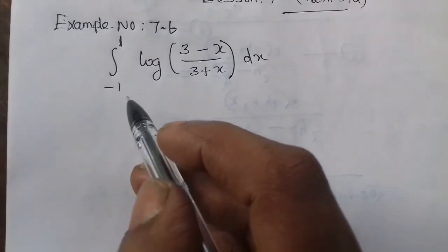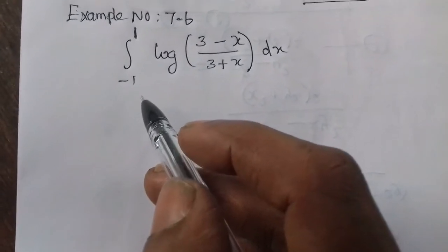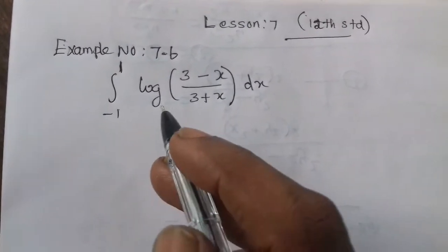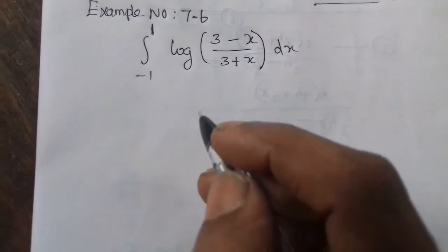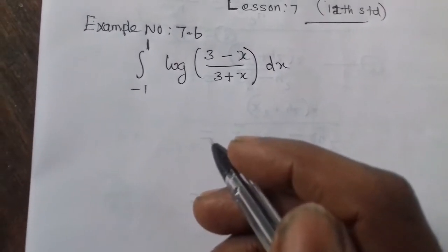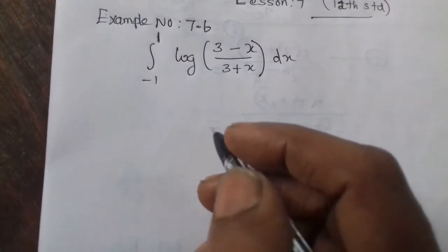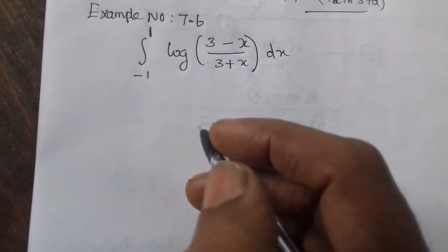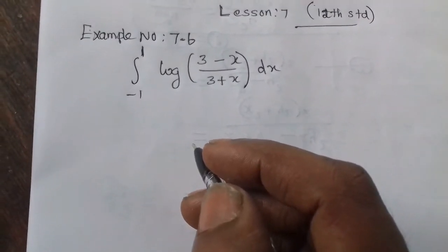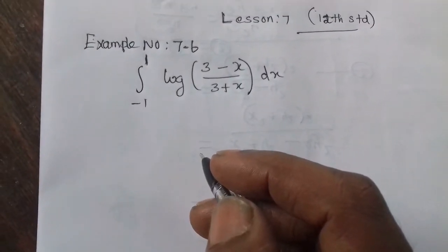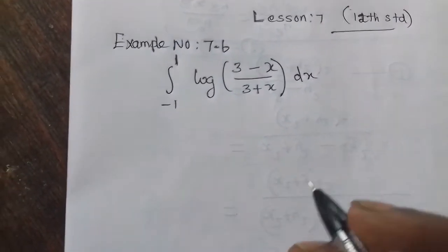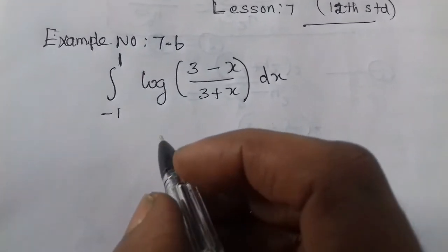The limits are symmetric. That means the sign changes. We are going to check whether the function is odd or even. If it is an odd function, the integral equals 0. For an even function, it becomes 2 times the integral from 0 to the upper limit. Now let's work on the problem.